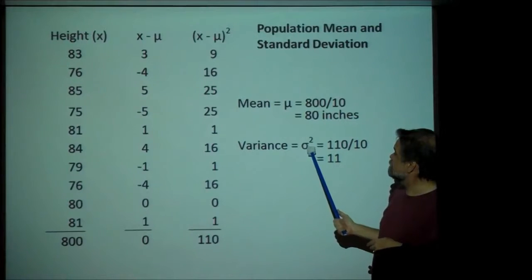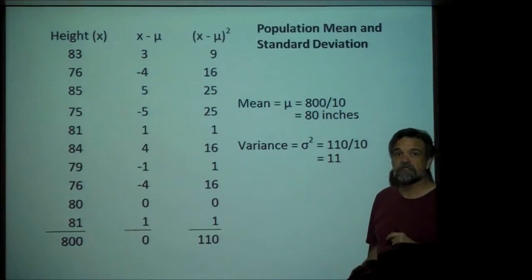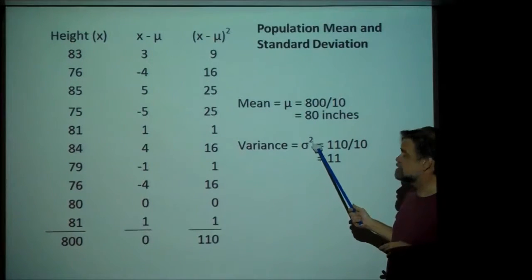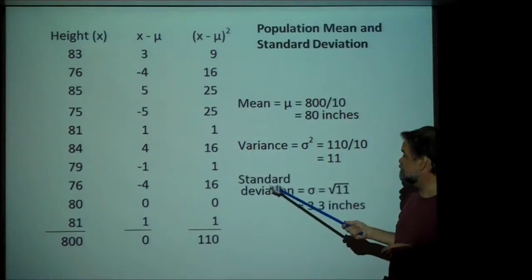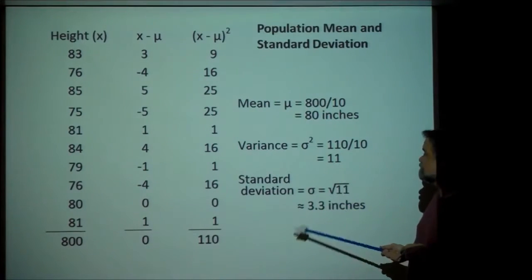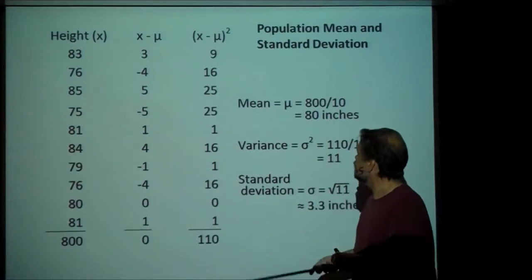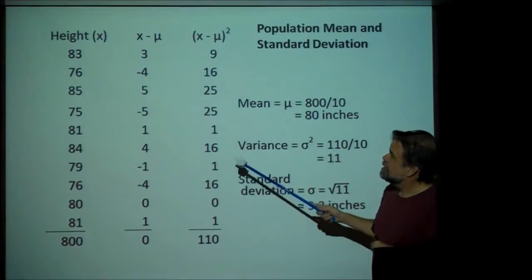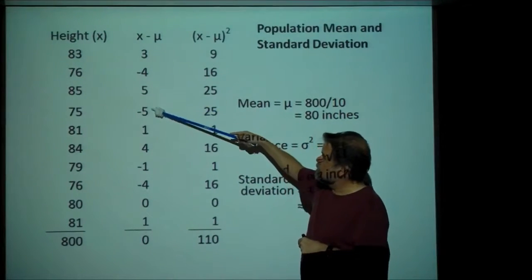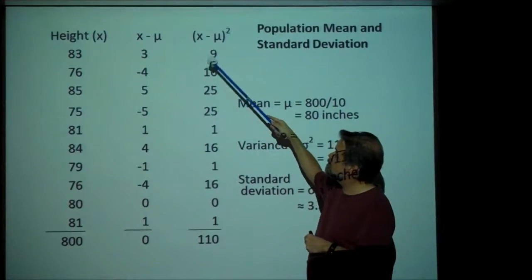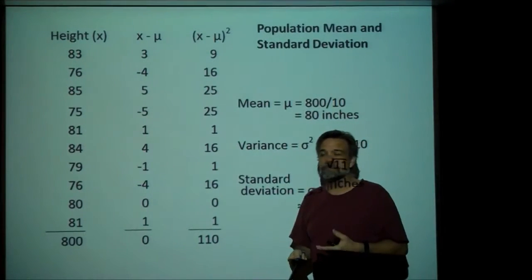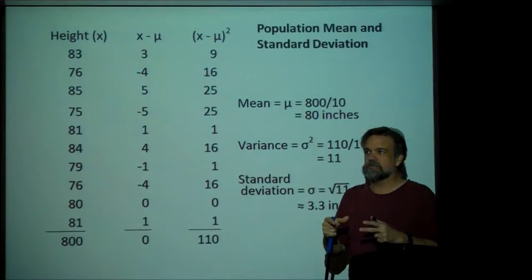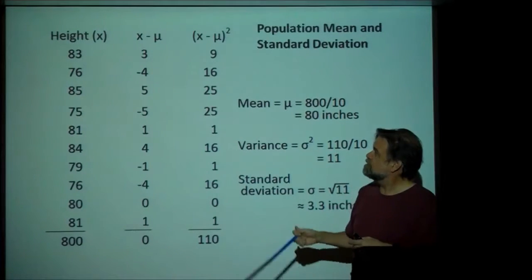This little symbol right here is sigma — it's a lowercase sigma. It's the standard deviation, and it's the square root of the variance. There's a reason why we do this. Notice our mean gives us 80 inches — our units are inches. These differences here are also in inches. When we square the differences, what we end up with is squared units.